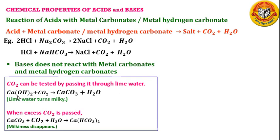Lime water is Ca(OH)₂ — when we put calcium oxide in water, we get lime water. When lime water reacts with carbon dioxide, we get calcium carbonate and water. When we pass excess carbon dioxide, calcium carbonate reacts with the excess CO₂ and gives Ca(HCO₃)₂ — calcium hydrogen carbonate — which is soluble in water, so the milkiness disappears.